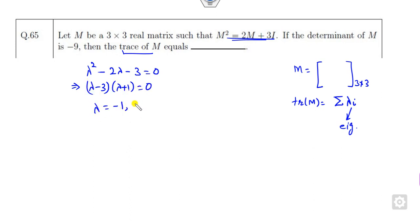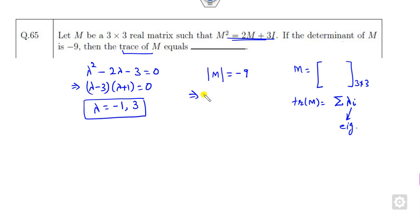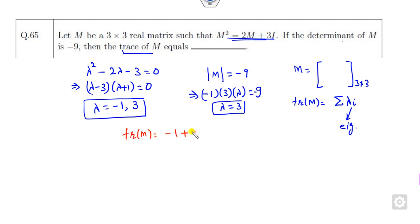Therefore, there are 2 eigenvalues. Once you know those 2 eigenvalues, the third eigenvalue — since the determinant is minus 9 — can be found. So it means if the eigenvalues are minus 1, 3, and their product is minus 9, the third eigenvalue is plus 3. So you have the 3 eigenvalues. The trace of this matrix is the sum of these eigenvalues, which is 5 — the correct answer.